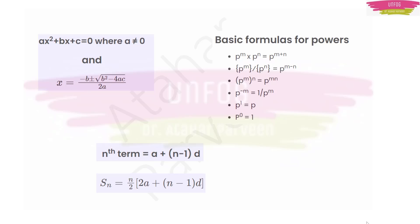Then you have this quadratic equation ax² + bx + c = 0, where a is not equal to 0. If you are able to factorize it, then you can factorize, or else you use this formula: x = (-b ± √(b² - 4ac)) / 2a.